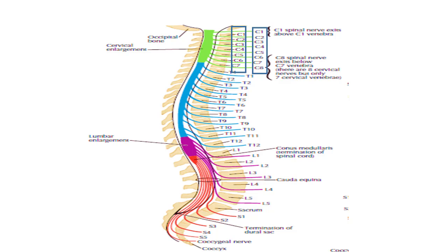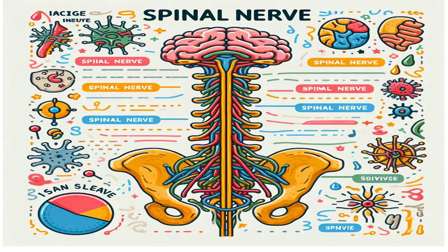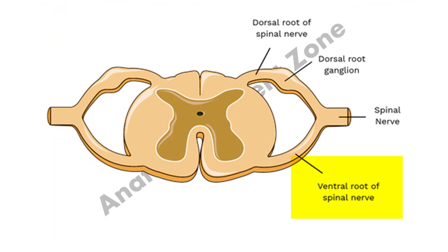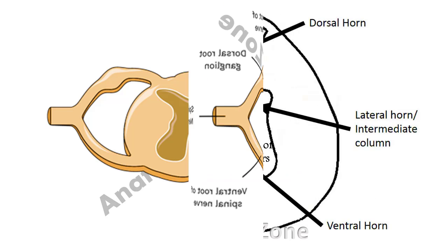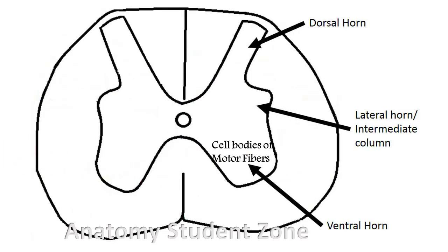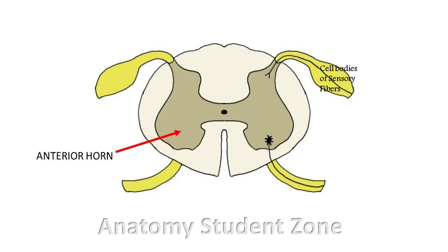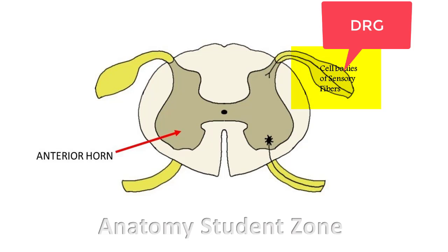Now I will go into the detail of spinal nerve anatomy. Each spinal nerve consists of two roots: the anterior or ventral root, which carries motor fibers, and the posterior or dorsal root, which carries sensory fibers. The cell bodies of these motor fibers are located in the anterior horn of the spinal cord, and the cell bodies of the sensory fibers are located in the DRG, which we have already covered in ganglia.